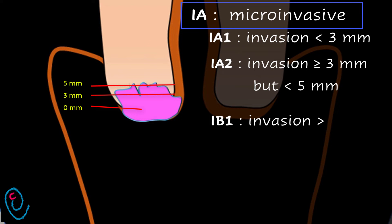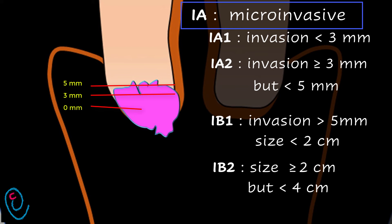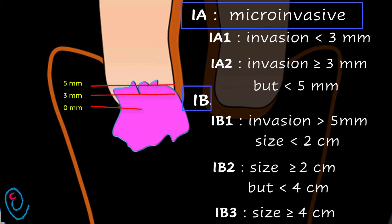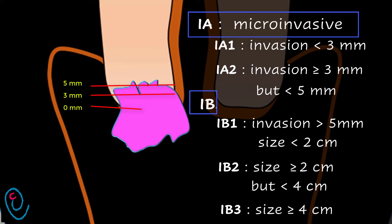When the invasion becomes 5 mm or more but the size of the tumor is less than 2 cm, it becomes stage 1b1. When the tumor size becomes 2 cm or more but less than 4 cm, it becomes stage 1b2. While a tumor size of 4 cm or more is called stage 1b3.